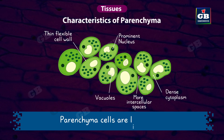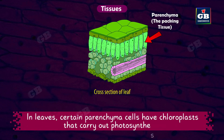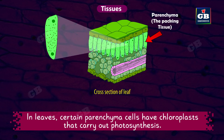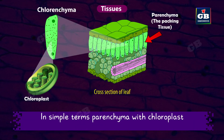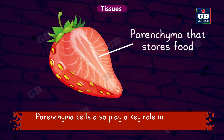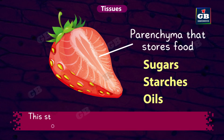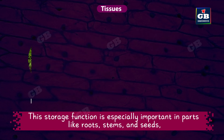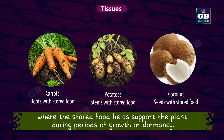Parenchyma cells are living cells. In leaves, certain parenchyma cells have chloroplasts that carry out photosynthesis — these specialized cells are called chlorenchyma, that is, parenchyma with chloroplasts. Parenchyma cells also play a key role in storing food for the plant, accumulating nutrients such as sugars, starches, and oils, which the plant can use for energy and growth. This storage function is especially important in parts like roots, stems, and seeds, where the stored food helps support the plant during periods of growth or dormancy.